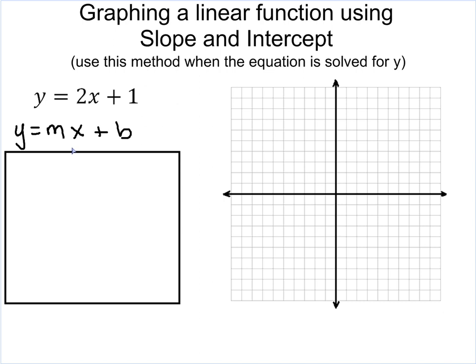The slope-intercept form of the equation, which we're going to use later on as well, is y equals mx plus b, where m is your slope and b is your y-intercept.